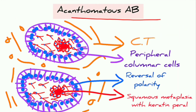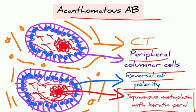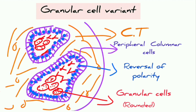In acanthomatous ameloblastoma, connective tissue stroma suspends the tumor islands, with peripheral columnar cells and reversal of polarity of the nucleus. Most importantly, squamous metaplasia with keratin pearl formation is seen — this is an important MCQ point: which histological type of ameloblastoma shows squamous metaplasia?